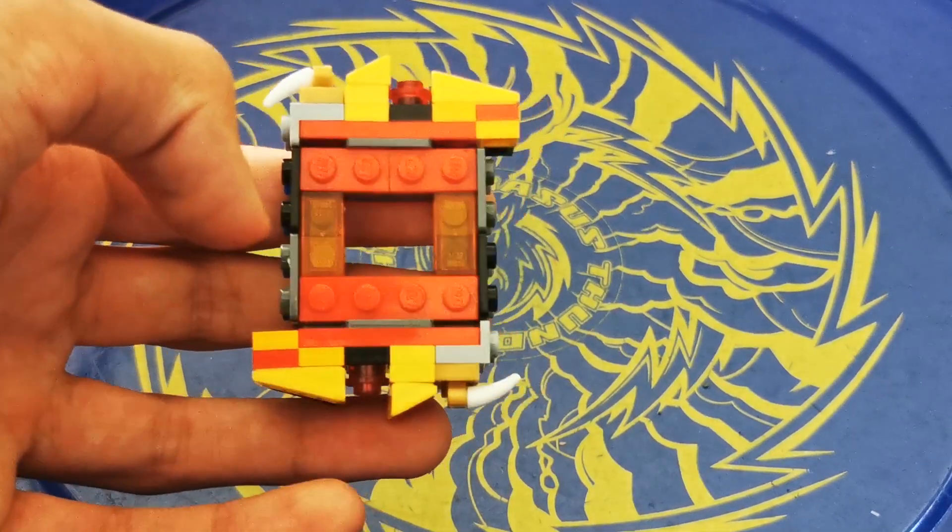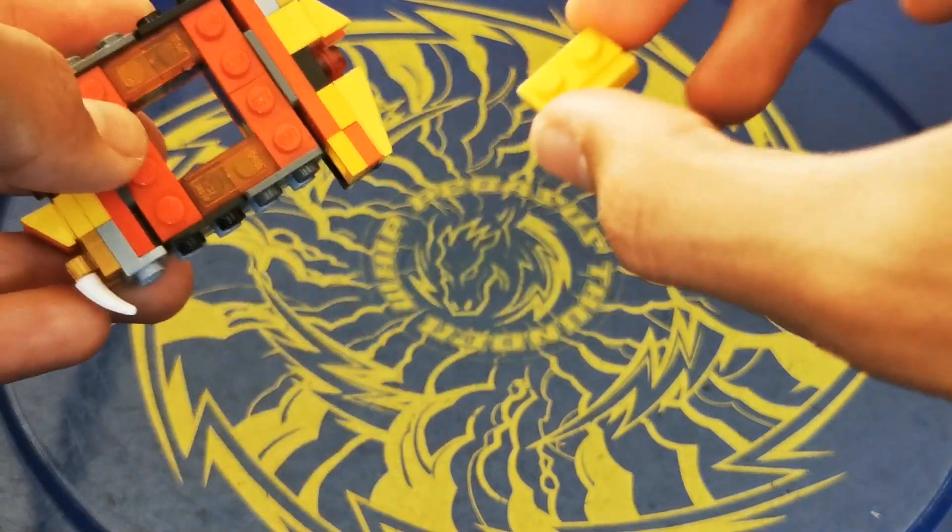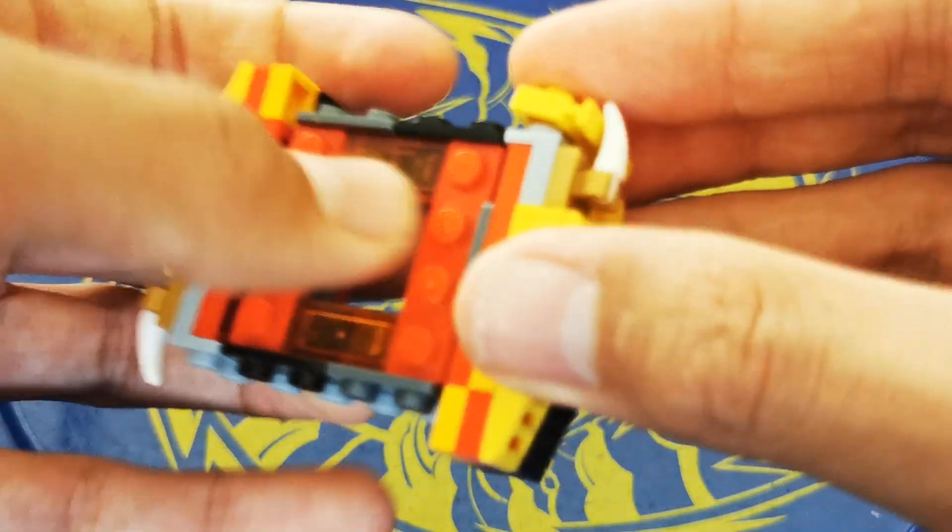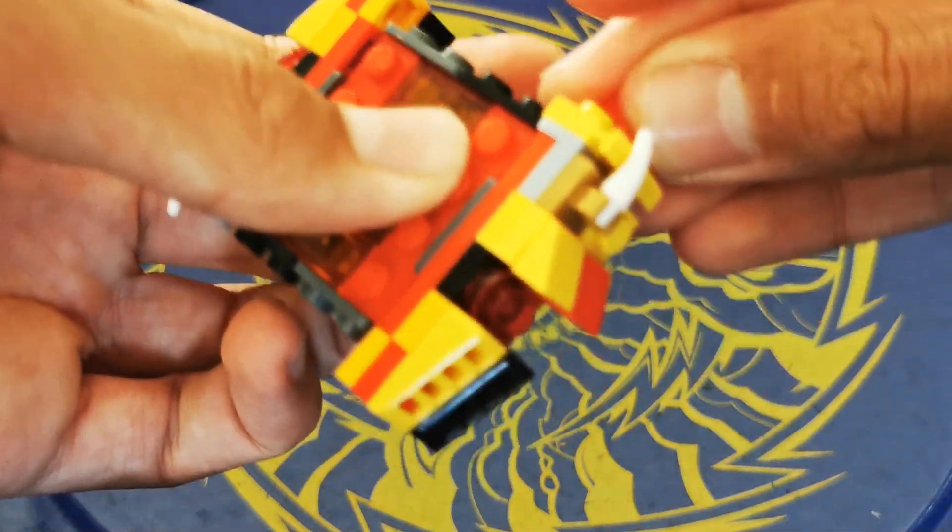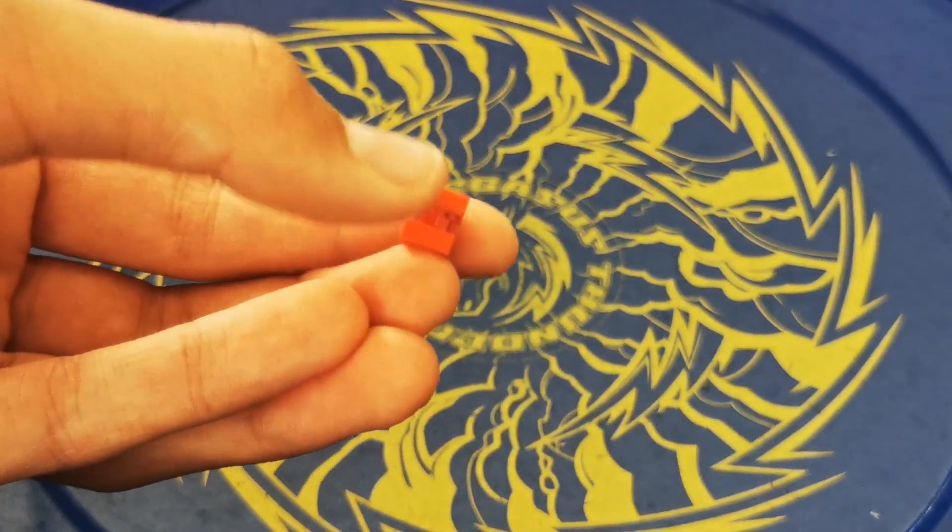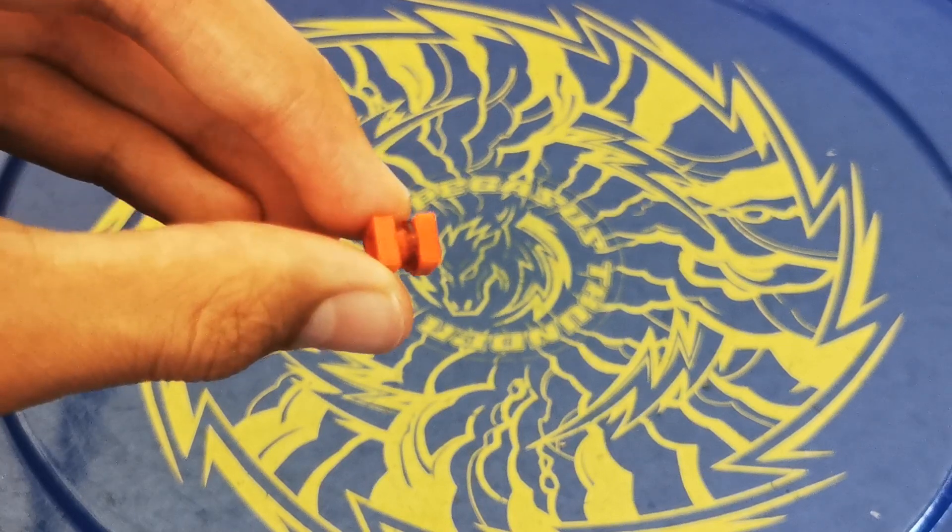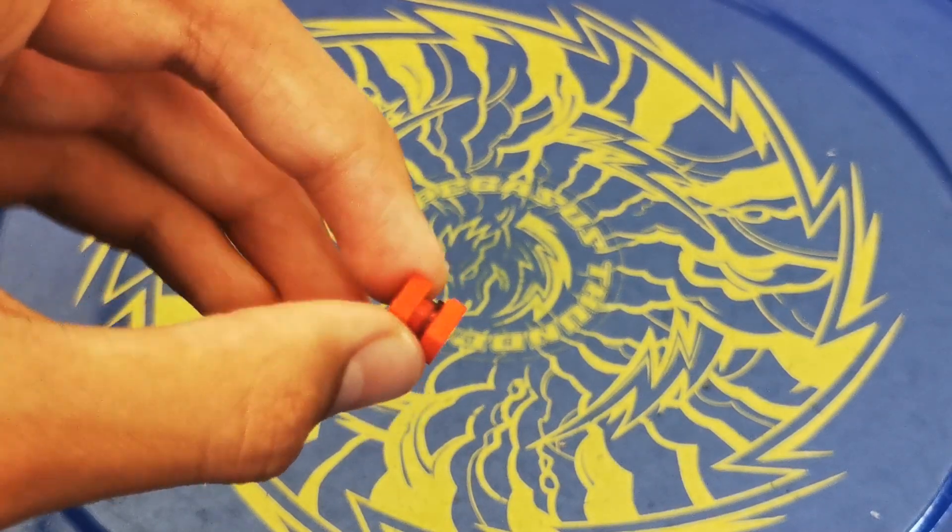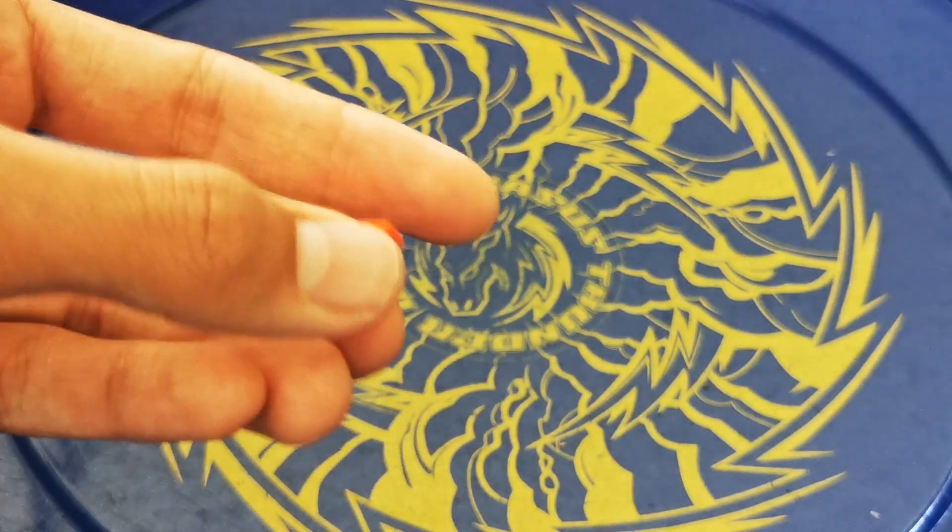Now make a second one and attach it to the other side. Then grab a 1x2 tile with this little piece sticking out there and put it here. Then grab a red cheese slope and attach it there. Then stack a 1x1 square tile in red and a 1x1 circular see-through red stud there, and a flat 1x1 square stud there.